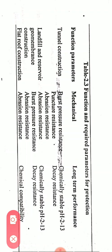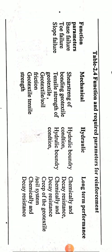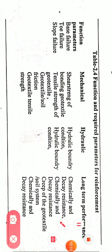This table shows the required parameters for reinforcement. Functional parameters include base failure, toe failure, and slope failure. Mechanical requirements include shear strength of bonding, tensile strength of the geotextile, and geotextile-soil friction. Hydraulic requirements involve hydraulic boundary conditions for both base failure and slope failure. Long-term performance requires chemical and decay resistance, which is common for all functional parameters.